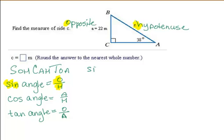So the sine of my angle is O over H. Let's fill in what we know. The sine of 38 degrees. O is 22. H is C.